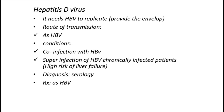Response to treatment with interferon alpha in patients with delta hepatitis and hepatitis B is less than in those with hepatitis B alone; recommended doses are higher and may produce sustained improvement in only a quarter of patients. Because the capsule of delta hepatitis is hepatitis B surface antigen, measures limiting transmission of hepatitis B also prevent transmission of delta hepatitis. Individuals infected with hepatitis B or D should not donate blood, organs, tissues, or semen. Methods of reducing transmission include decreased use of contaminated needles and syringes by injection drug users and use of needle safety devices by healthcare workers.